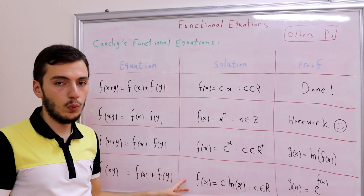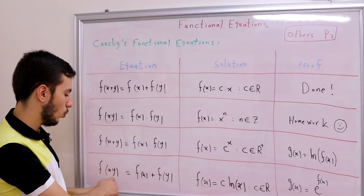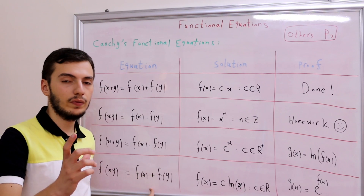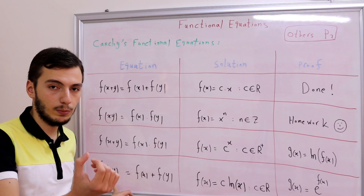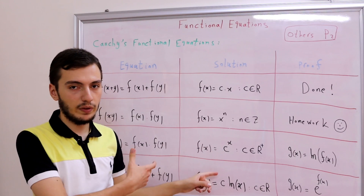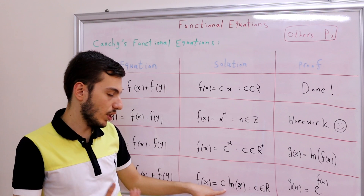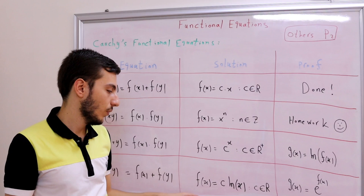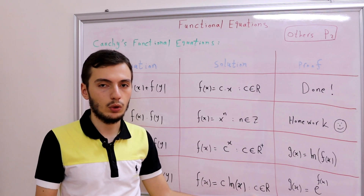The fourth and final equation does the opposite — it converts multiplication into addition: f(xy) = f(x) + f(y). This is like the inverse of the third one, and the solution is f(x) = c·log(x), where c is a real constant.